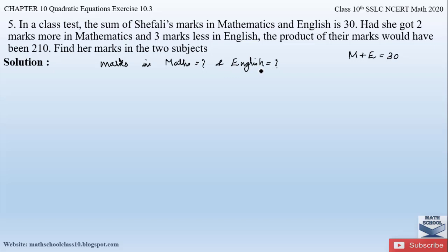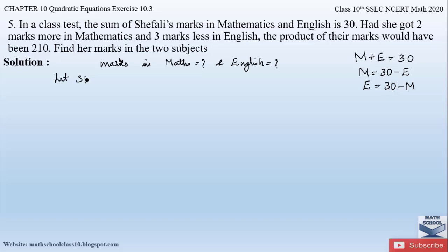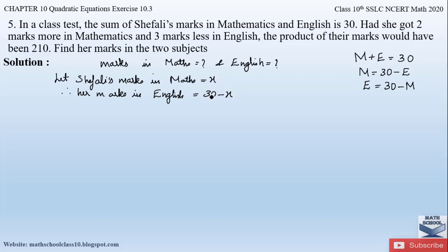We have to find the marks in maths and English. Whatever they have asked us to find, we assume it to be the x value. We can find the marks of maths as 30 minus the marks in English. Similarly, for English we take 30 minus the marks in maths. So we will take one subject's marks to be x. Let Shifali's marks in maths be equal to x. Therefore her marks in English will be 30 minus x.